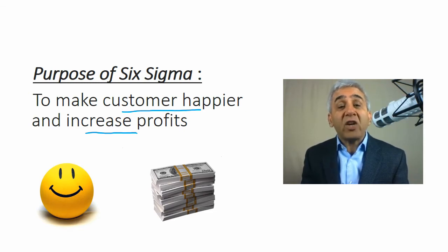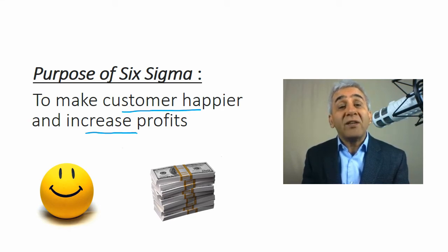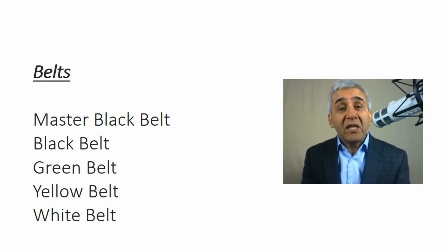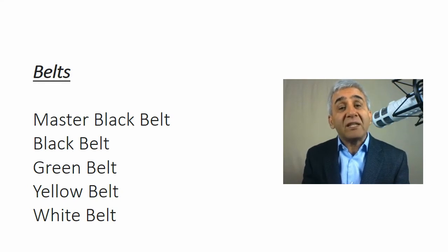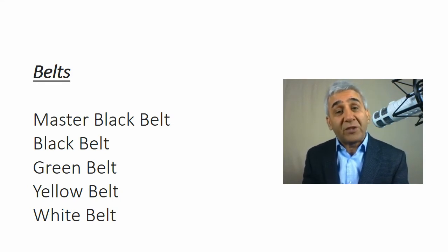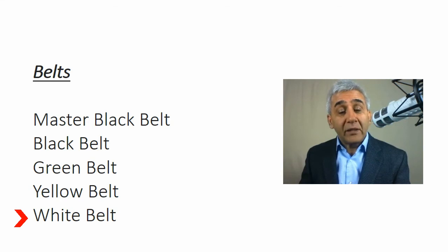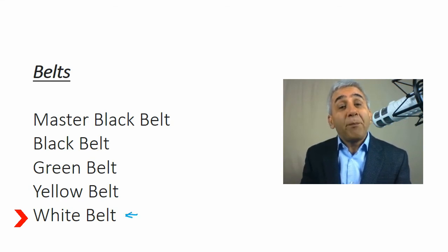Now let's move on to the second question: what are these belts, and what is White Belt? Whenever you talk about Six Sigma, you talk about belts — white belt, yellow belt, green belt. Just like martial arts, Six Sigma also has different color belts, and these colors represent your mastery of the subject. As a newcomer to Six Sigma, you start with the white belt — that's the first belt you achieve by having some basic understanding of Six Sigma.